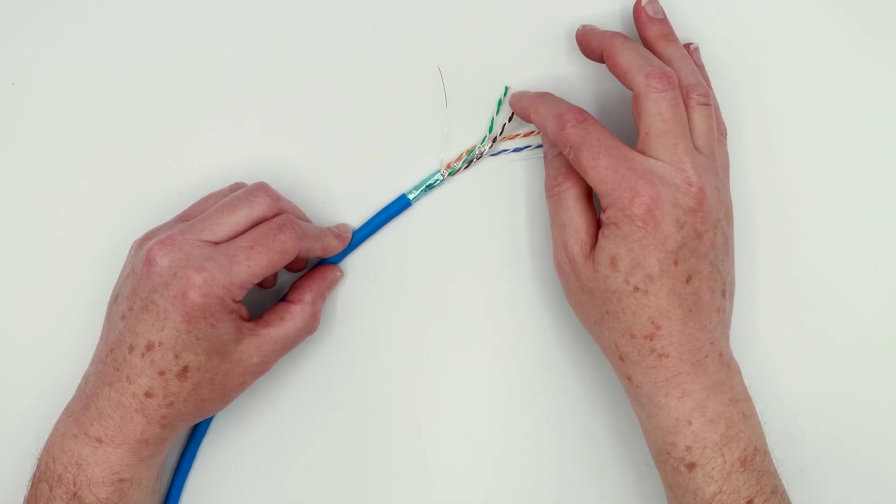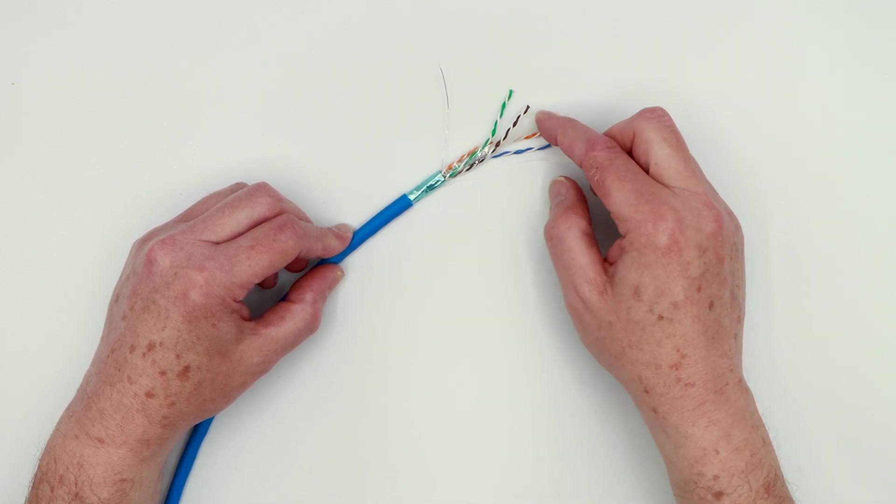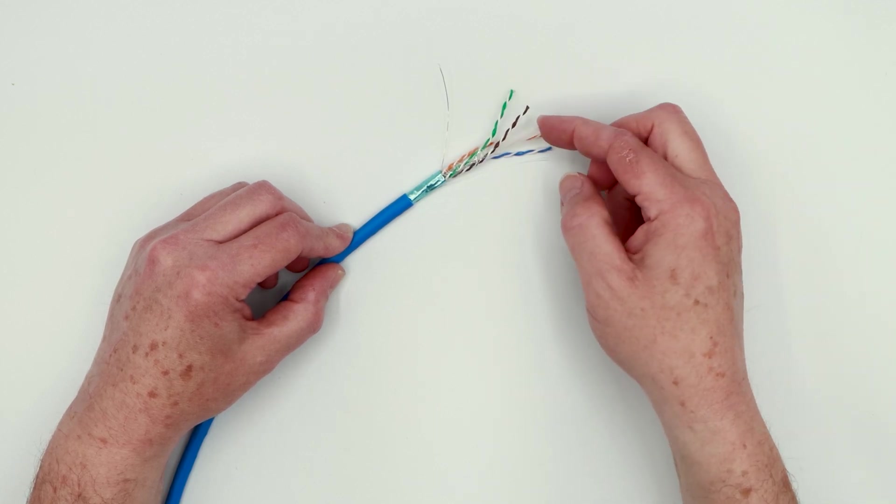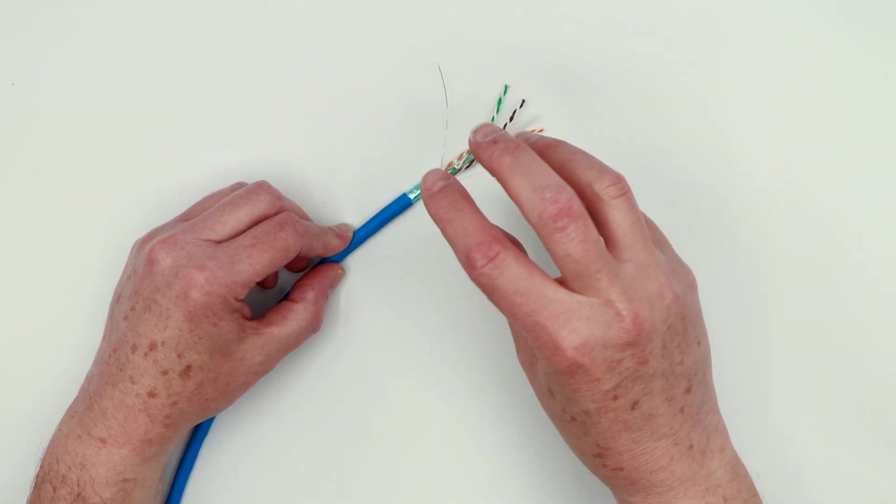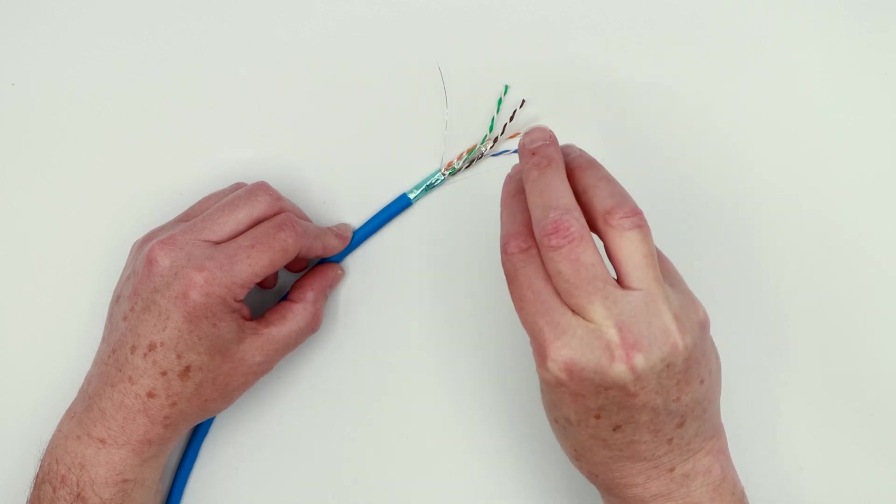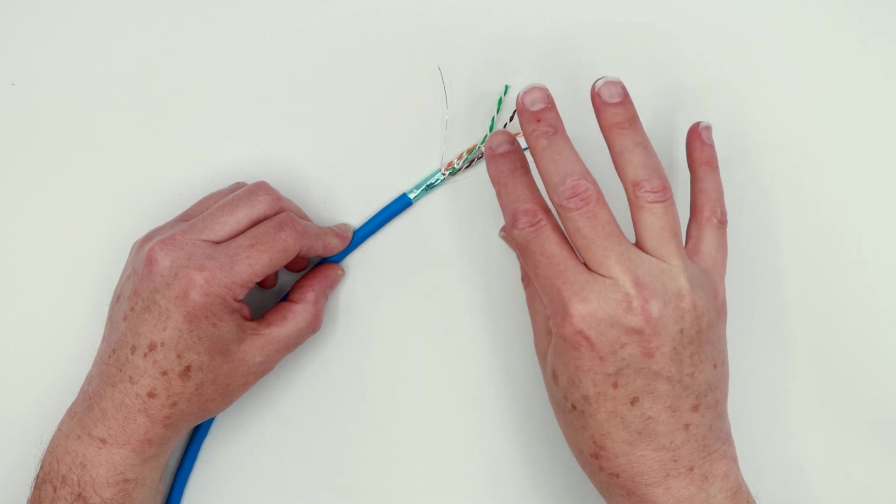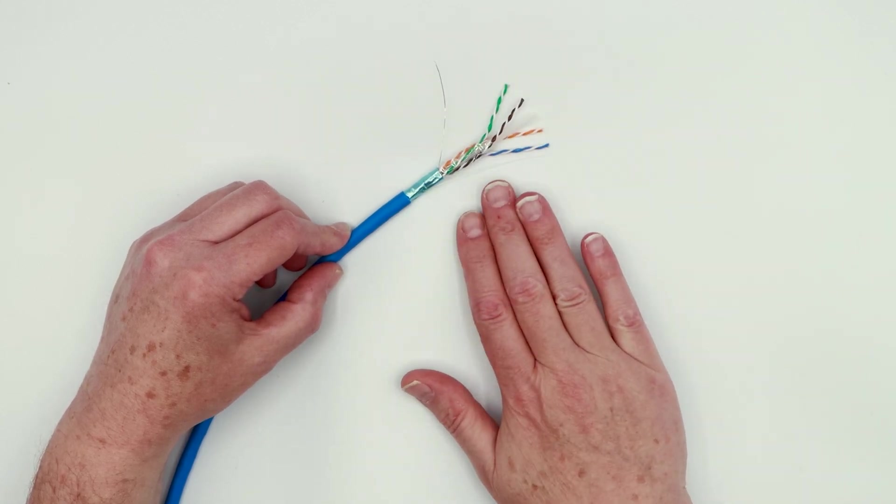You also have your four twisted pairs, and they're pretty tightly twisted. It is, after all, Cat 6A cable. And then a center spline. And that spline is designed to keep the pairs separated and in place to minimize internal cable crosstalk. All right. So that is what the inside of the cable looks like.